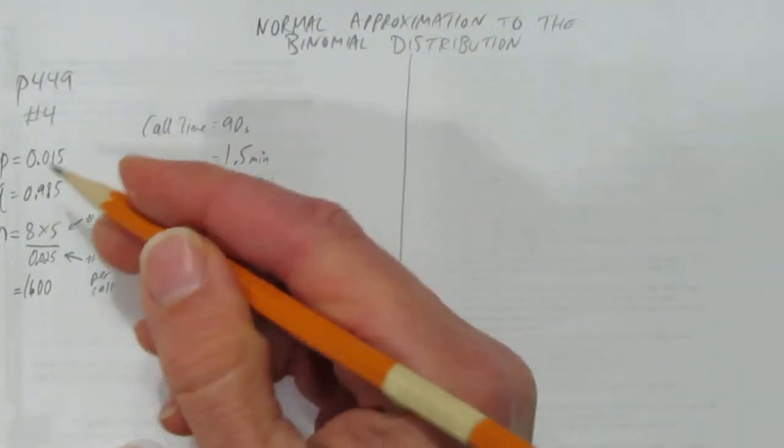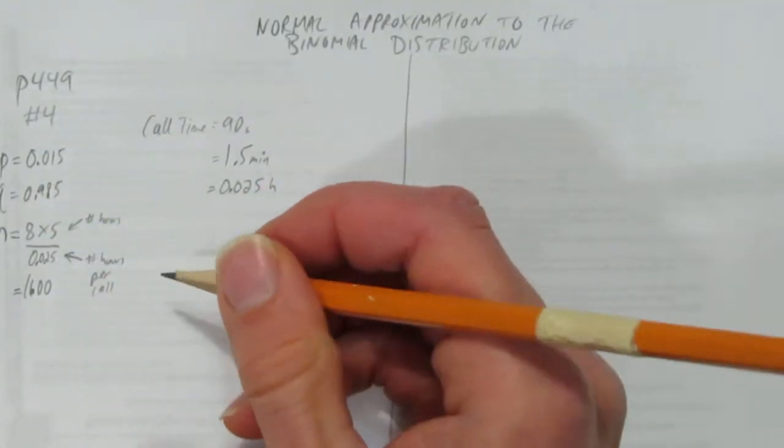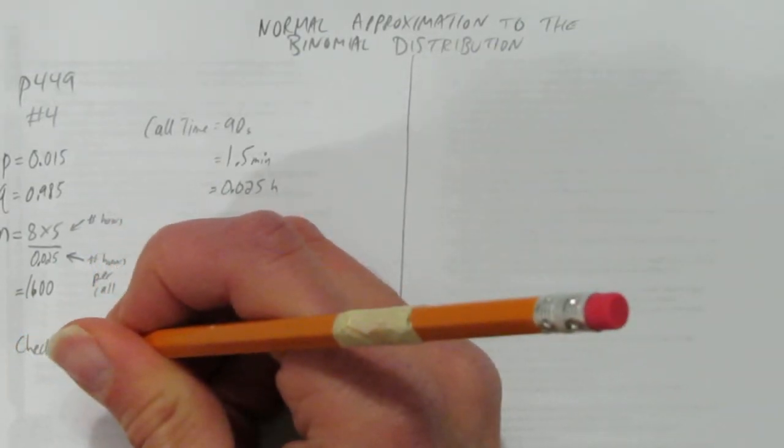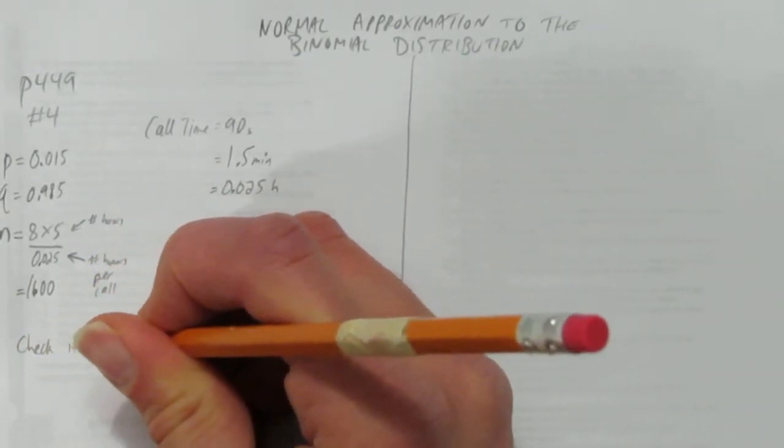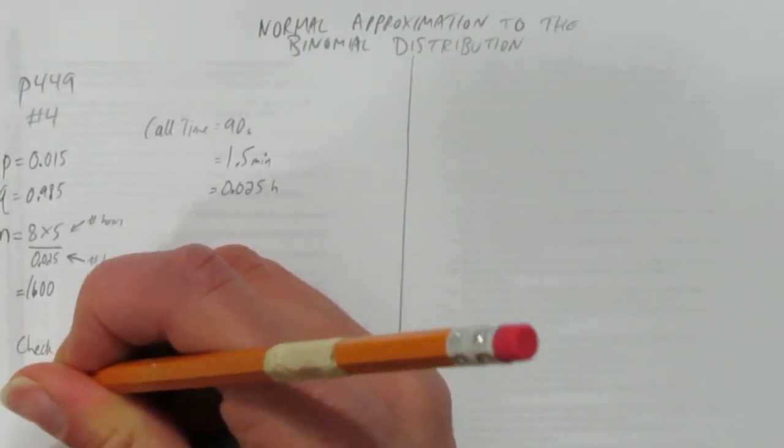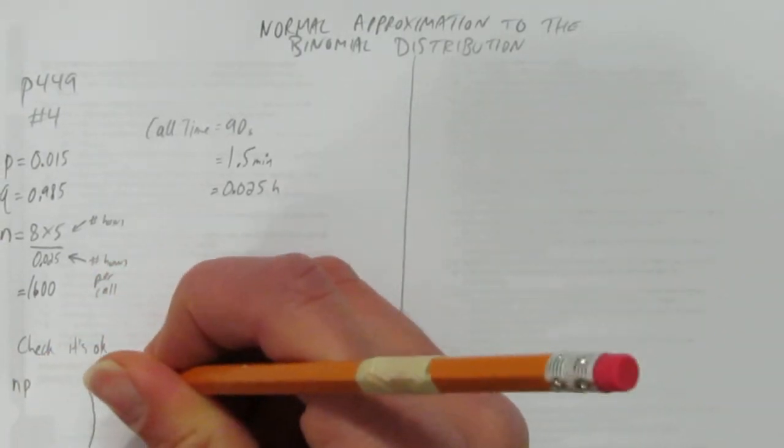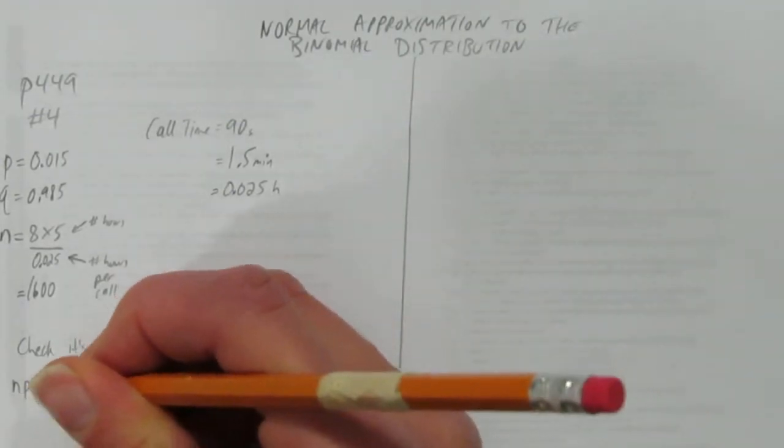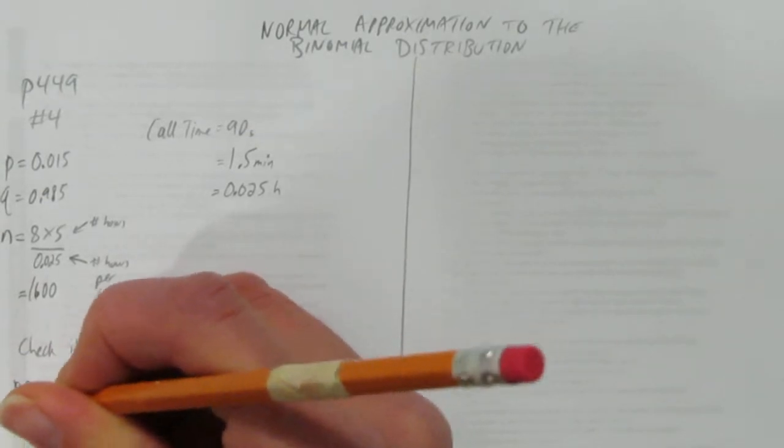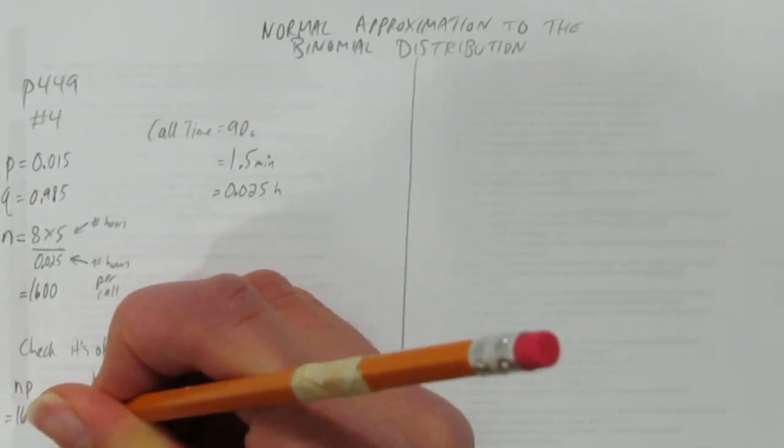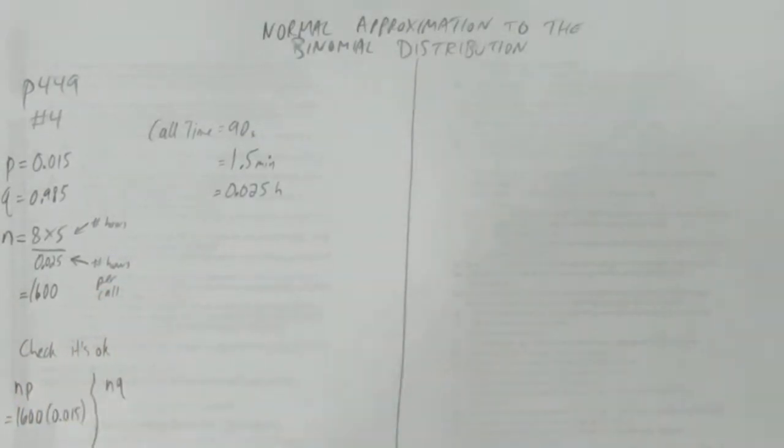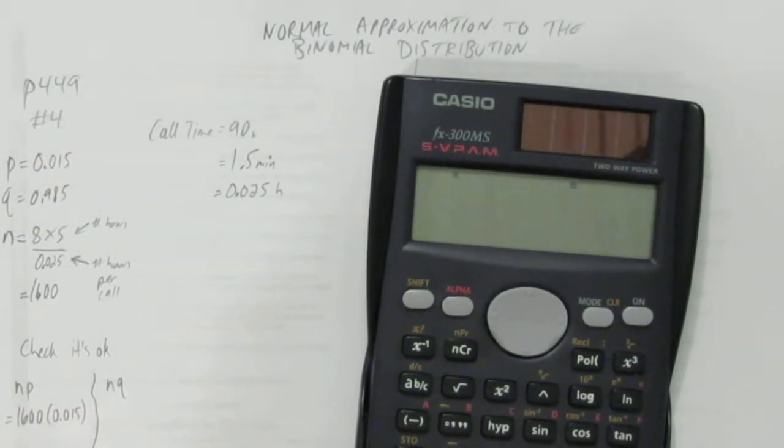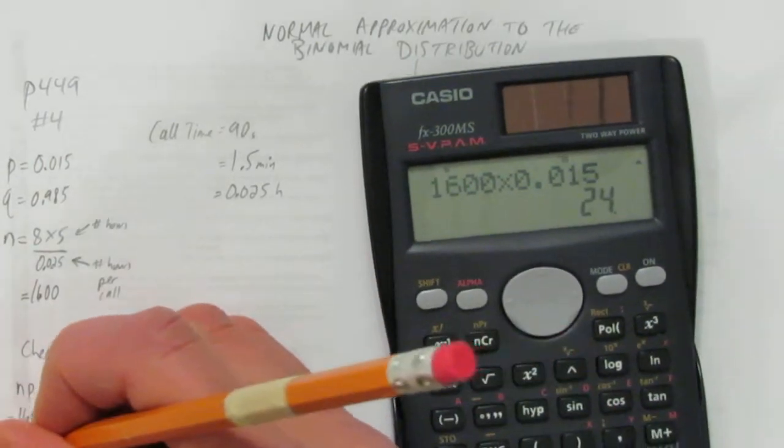Now we have N, we have P, we have Q. But before we go ahead and use the normal approximation, we have to check to make sure that it's okay. That is, we have a rule that N times P and N times Q have to be greater than or equal to 5 in order to use the normal approximation. Let's check. What's 1,600 times 0.015? We get 24. Good. Bigger than or equal to 5. We're good.